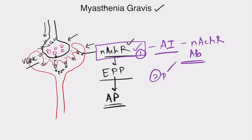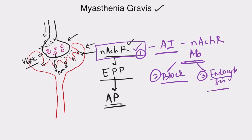The antibodies can also block these receptors, causing competitive blockage. Third, they can increase endocytosis of these receptors. All three mechanisms prevent the acetylcholine released in the synaptic cleft from acting on these receptors. If nAChRs are not bound to acetylcholine, the EPP — the graded potential — may not reach the threshold, and an action potential will not be generated.